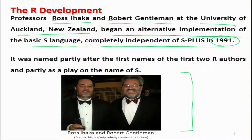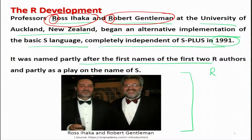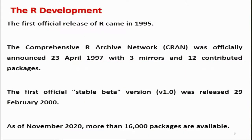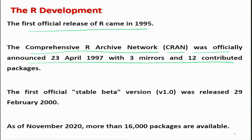As I said, 1991 was the time when I was in the first year of my MSc program, which is why I said I witnessed the development of this software. People say the software was named R because R is the first letter of the first names of these two professors. It is also partly because the earlier S Plus software had its language called S language, so this was called R. The first official release of R software came in 1995.